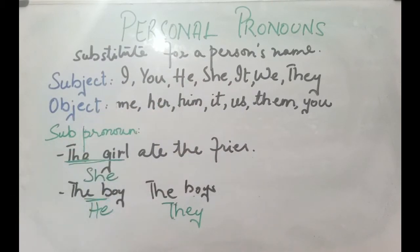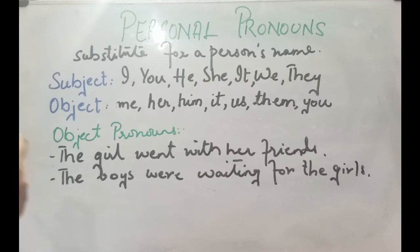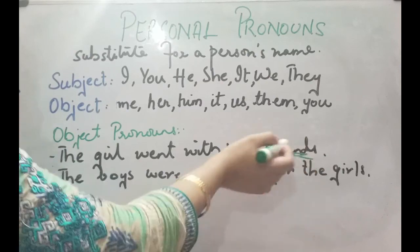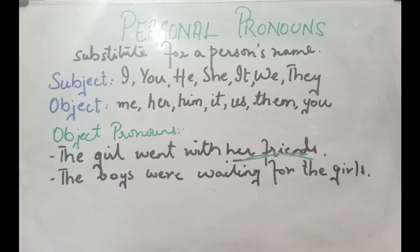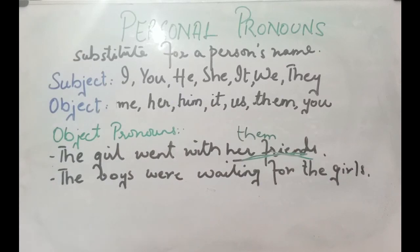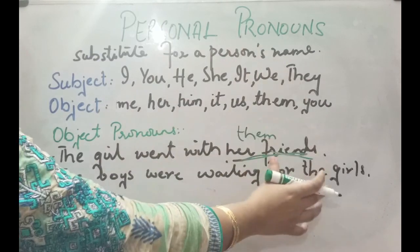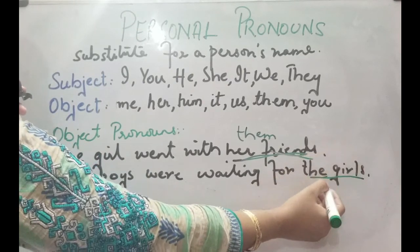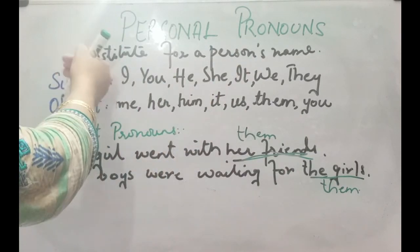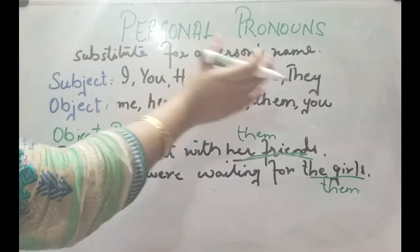Now let's see some examples of object pronouns. Object pronouns replace the object in the sentence, which is always found in the second part of the sentence. For example: 'The girl went with her friends' — since 'her friends' is plural, I replace it with 'them': the girl went with them. Similarly, 'The boys were waiting for the girls' — the object 'the girls' is replaced with 'them.' Note that 'it' and 'you' can appear both as subject and object.